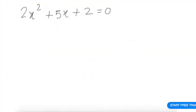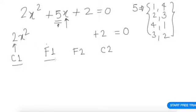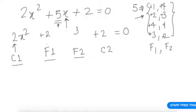Now in the Vedic way, the coefficient of x is split — 5 can be split as 1 and 4. Here, c1 stands for the coefficient of x squared, and f1, f2 stand for the factors. Imagine if we take 2 and 3 as the factors: 2 + 3. The ratio of c1 divided by f1 should equal f2 divided by c2.